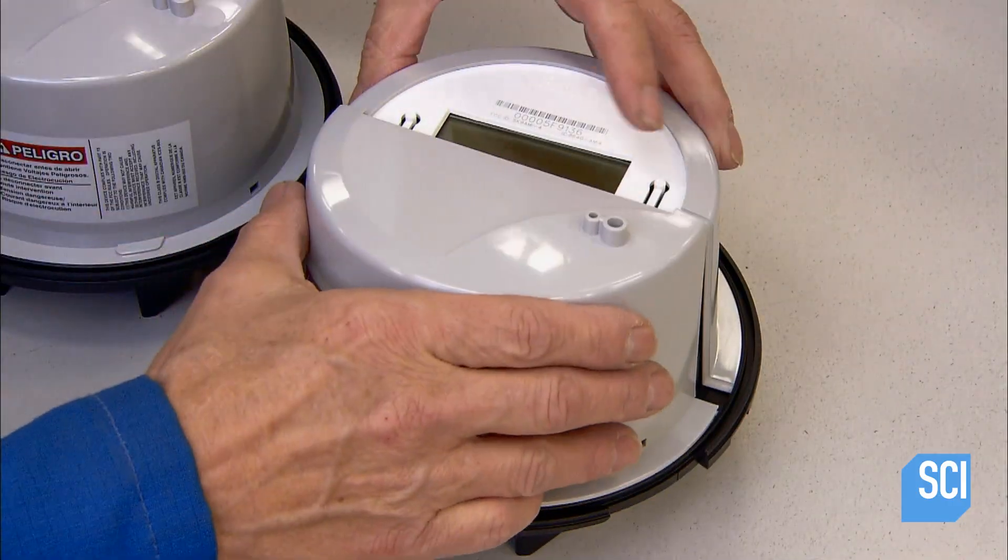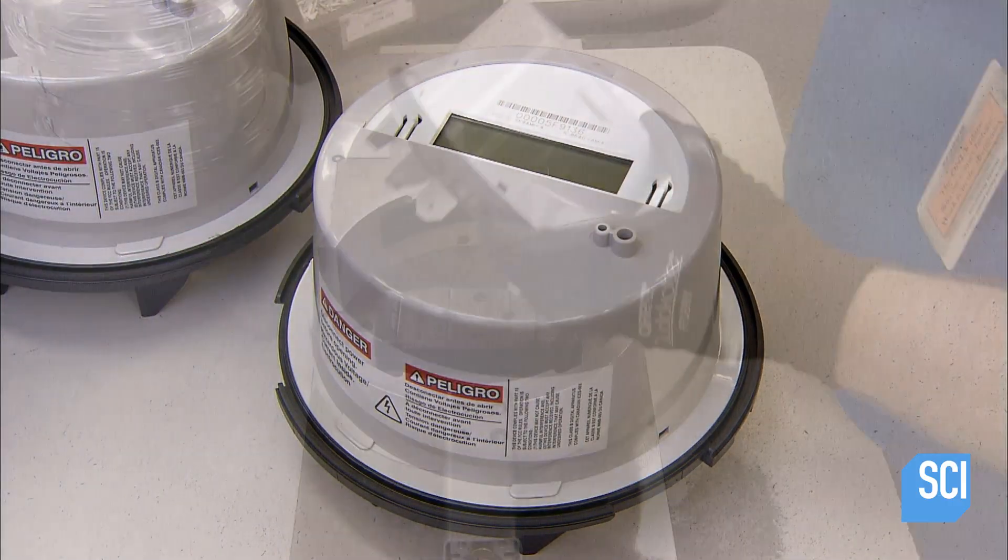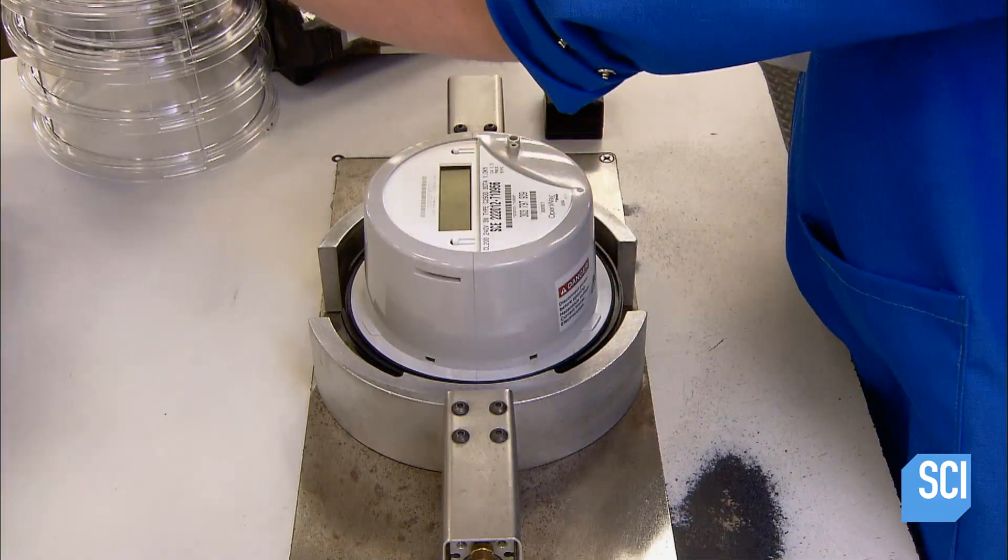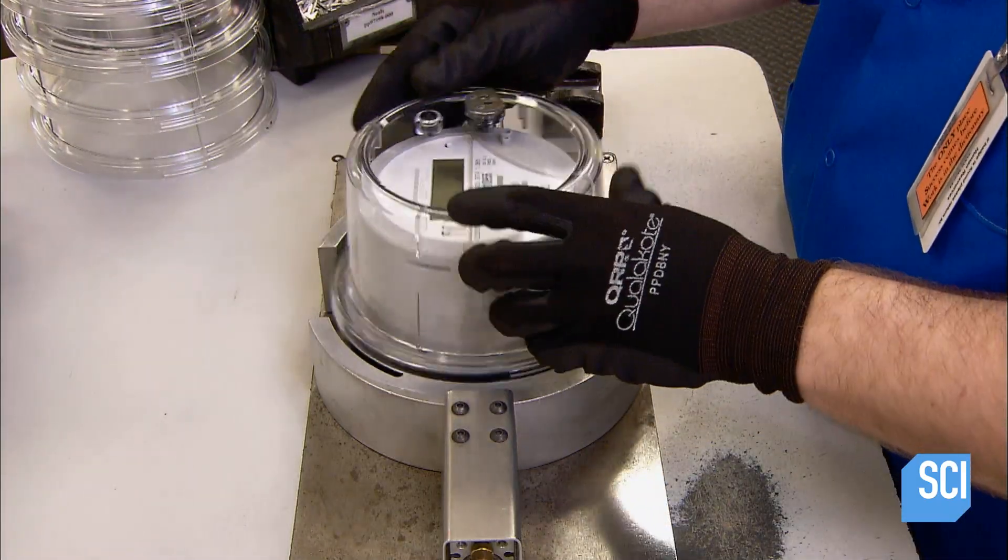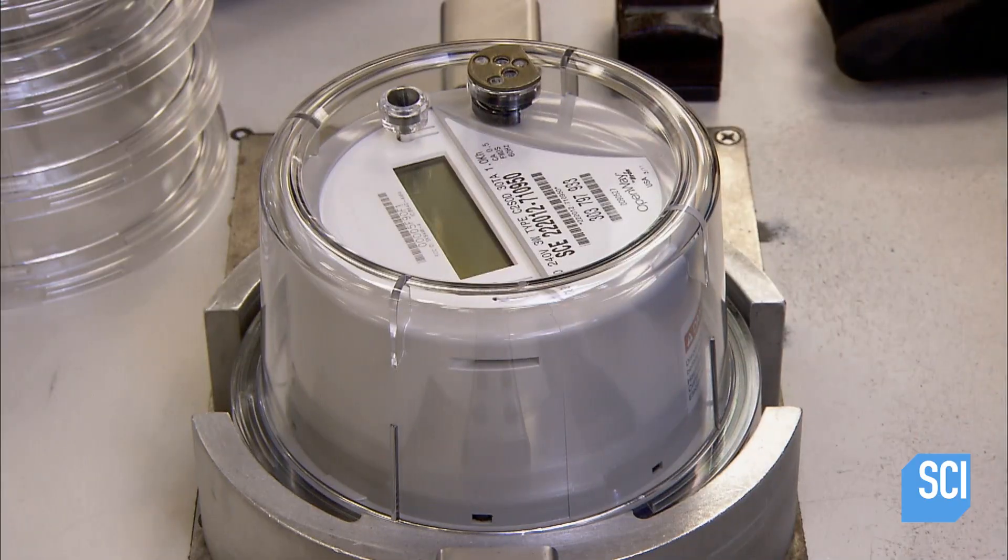The metrology board sends its measurements to the display circuit board, which interprets the data, and sends it to a third circuit board, which transmits it by radio frequency to the utility.